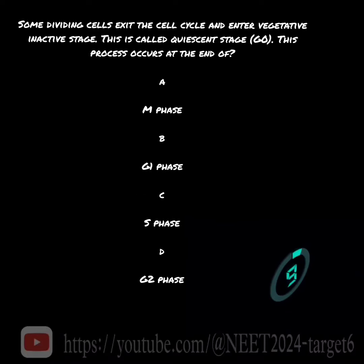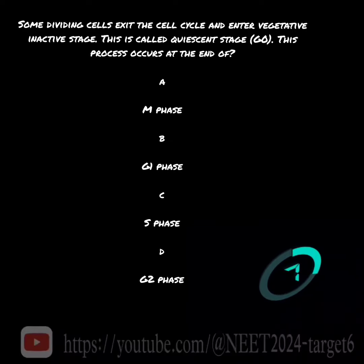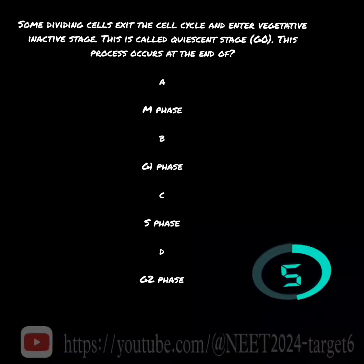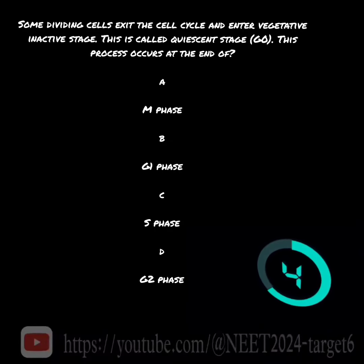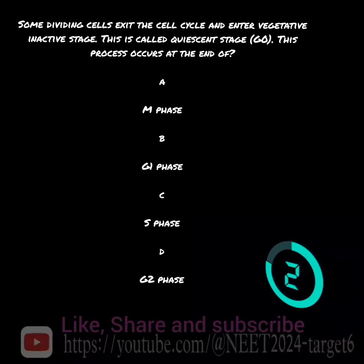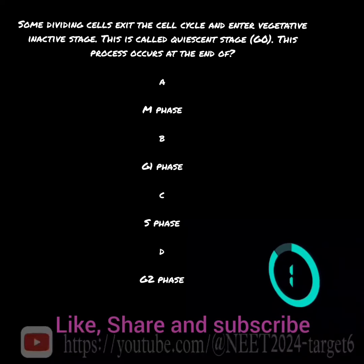Some dividing cells exit the cell cycle and enter a vegetative inactive stage. This is called the quiescent stage, G0. Please like, share, and subscribe. Thanks for watching.